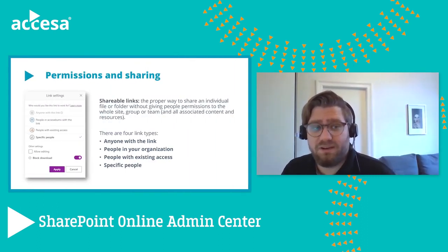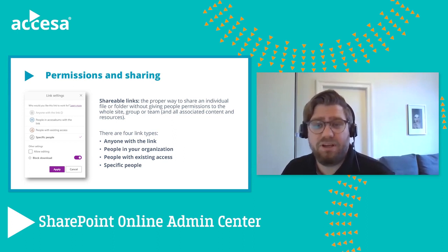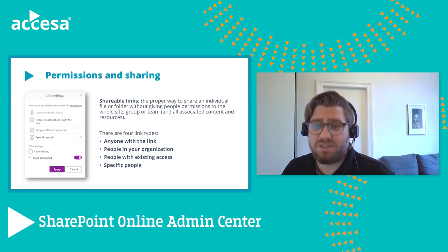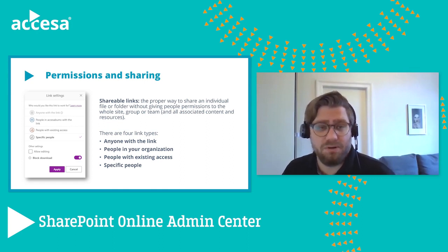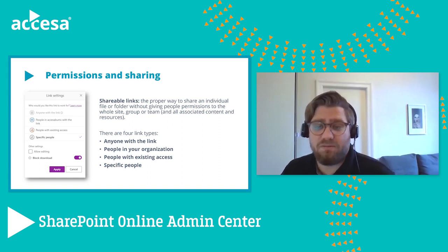When we talk about permissions sharing, we have to talk about shareable links — a proper way to share individual files or folders without giving people permissions to the whole site, group, or team. There are four types: 'Anyone with the link' works for everyone including people outside the organization — they don't need to authenticate, so this grants anonymous access. 'People in your organization' excludes guests but users don't need to be group or team members. 'People with existing access' only works for existing members. And 'Specific people' only works for the people the user specifies when sharing the item.